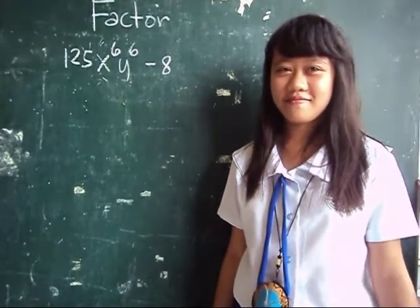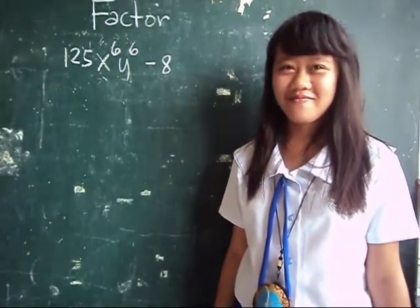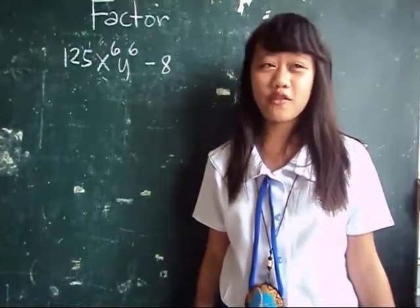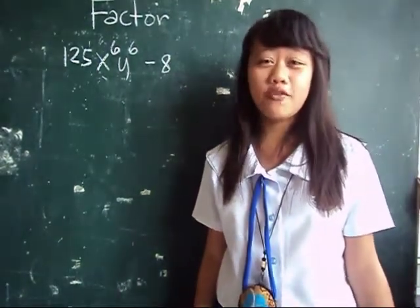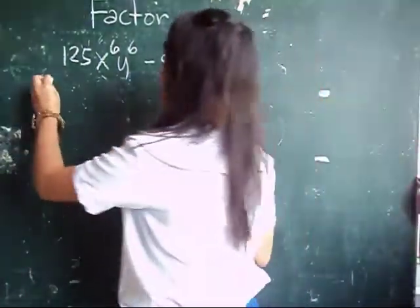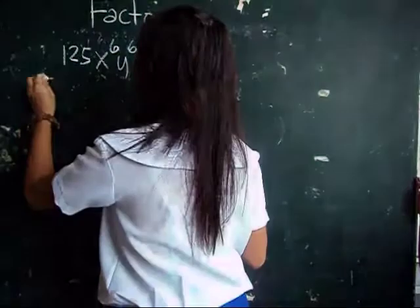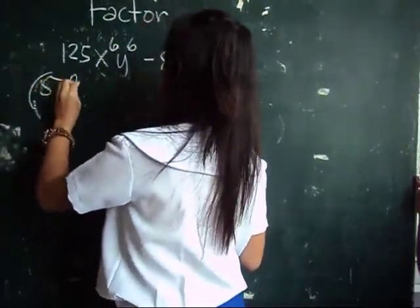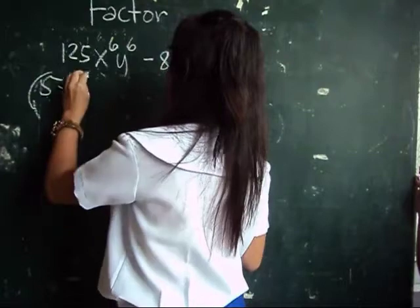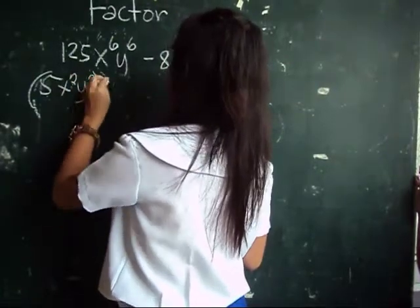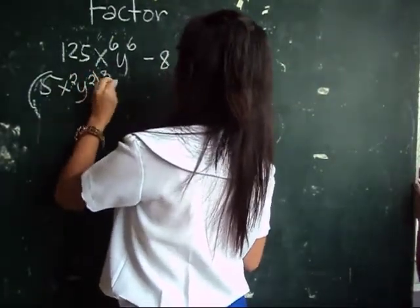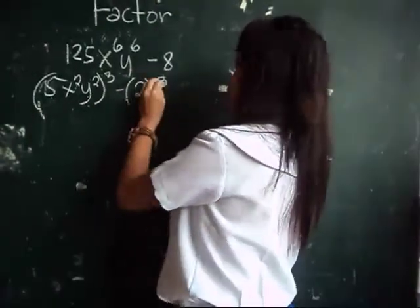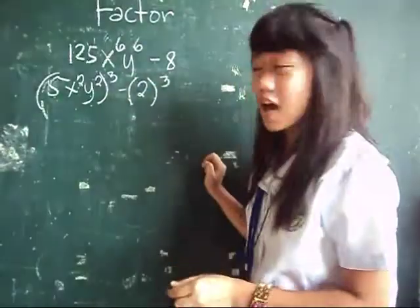Factor 125x to the power of 6 times y to the power of 6 minus 8. Write this in the form difference of two cubes. The factors are...